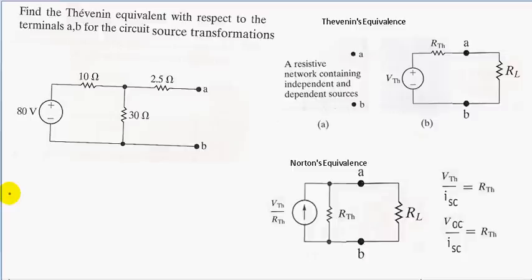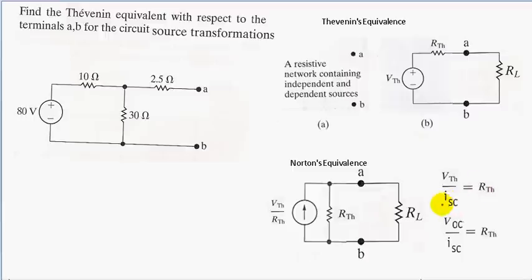If you recall from the previous videos we were talking about using Thevenin's equivalents and Norton's equivalents to simplify circuits, and how we did it was V open circuit, or V Thevenin's, over I short circuit. We can interchange our Thevenin's equivalent circuit with our Norton's equivalent circuit using this formula. If we take this voltage source and divide it by our R Thevenin's, we can get our current source, or I short circuit, in parallel with our R Thevenin's, and these two circuits would be equivalent.